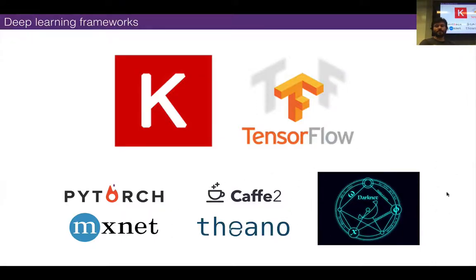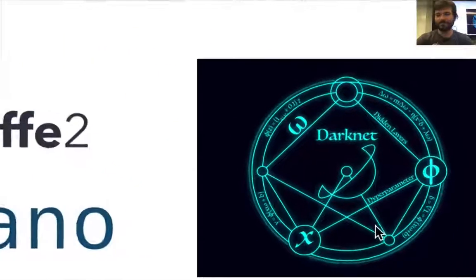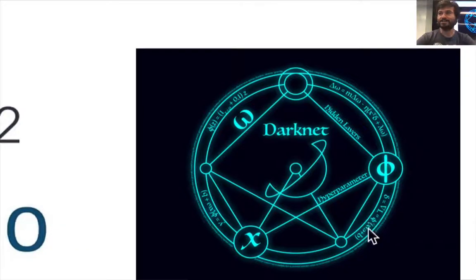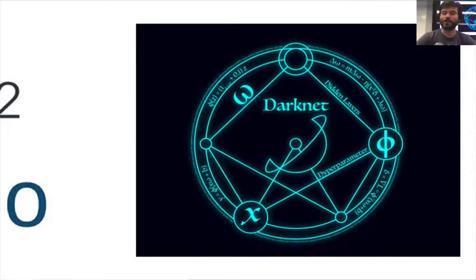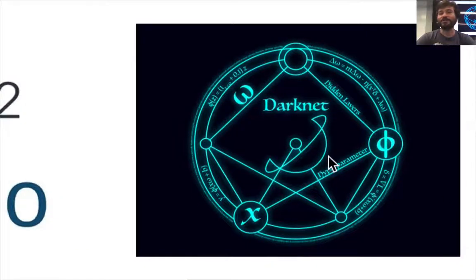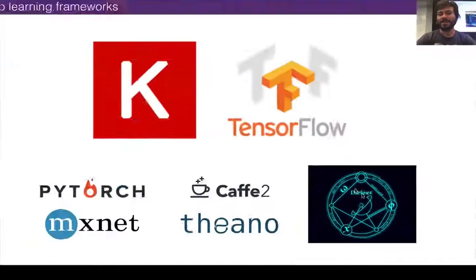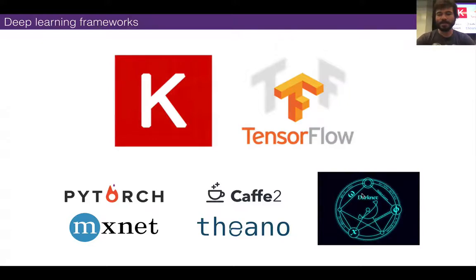My favorite is DarkNet — not because it's the most functional, but because it's just the weirdest. This is an actual deep learning framework called DarkNet, and it's made by a really zany person named Joseph Redman. We'll talk about that later.